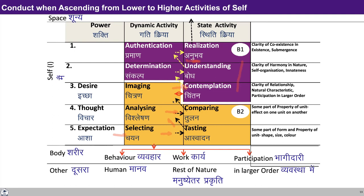If you look at the process of developing the self: we might be operating here at the level of expectation. From there, we are able to move to the level of thought, then to the level of desire, and then we are able to contemplate on the right feelings. From here, we are able to go to even higher activities. And there comes a stage when we are able to realize the whole existence as coexistence. Once this is accomplished, the second possibility gets opened. And then with this realization, we are able to guide the lower activity of the self — and this is the way the self gets self-organized. So we are all in this process only, moving from lower activities to the higher activities. Once the higher activities get activated and awakened, then the lower activities will get self-organized.